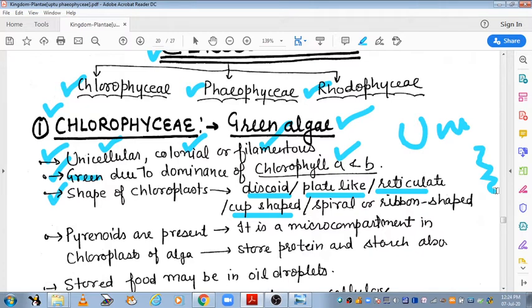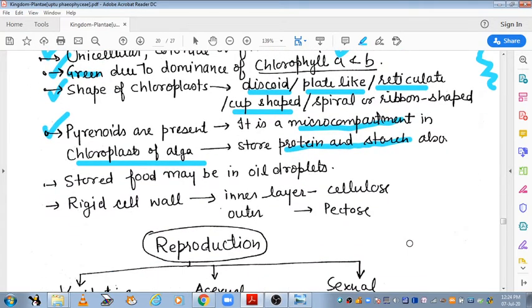Pyrenoids are present. It is a microcompartment, a small compartment in the chloroplast of algae, and its function is to store protein and starch also. Both of them are stored in pyrenoid. Next, let's talk about stored food. They are stored in oil droplets.